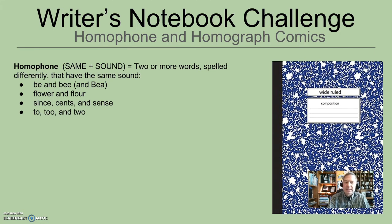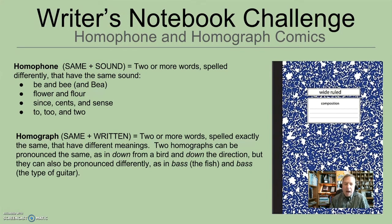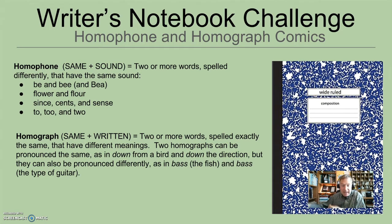Homographs come from the Greek roots for 'same' and 'written.' Graph, as in telegraph or autograph, is the written form of something. Homographs are two words spelled exactly the same but with different meanings — it could be two or more words. They can be pronounced the same, like 'down' meaning feather down and 'down' meaning the direction, or pronounced differently, like 'bass' the fish and 'bass' the guitar. The pronouncing them the same or differently is optional.